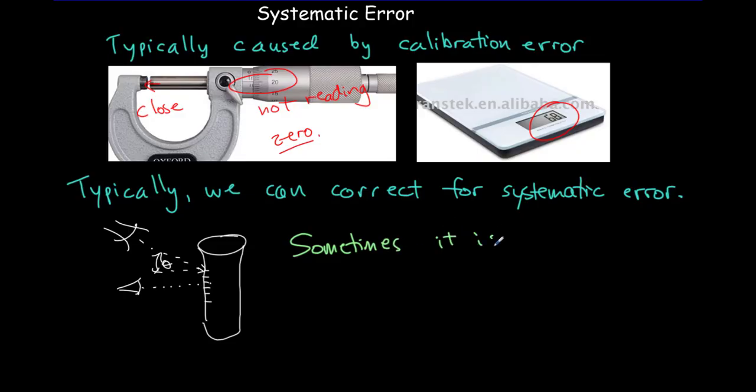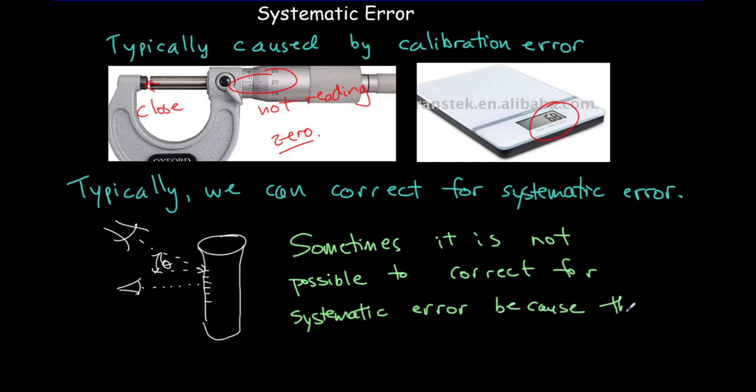Sometimes it is not possible to correct for systematic error, because there is a random aspect to it. So it's nice when you can correct for it. It's not a problem. But sometimes, and this comes up more frequently than you'd like it to, you can't make a correction.